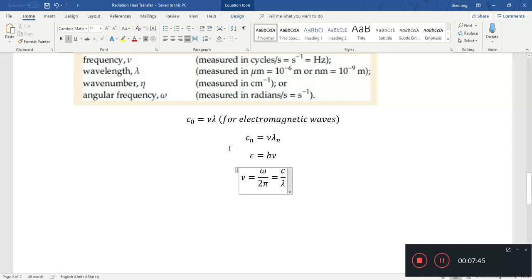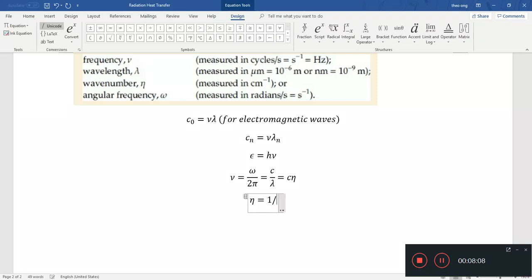That's just a refresher on what it is, but more interestingly for us will be the wave number. If we substitute this equation in and do some substitution, we find that ν = c/λ, which equals cη. So η is the wave number, η is basically 1/λ. This is wave number.